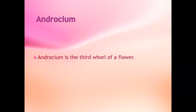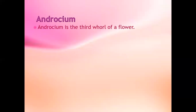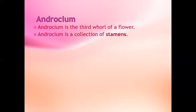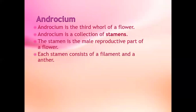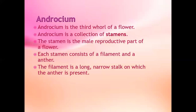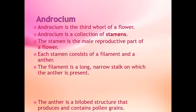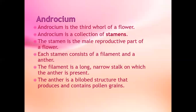Androecium. Androecium is the third wall of a flower. Androecium is a collection of stamens. The stamen is the male reproductive part of a flower. Each stamen consists of a filament and an anther. The filament is a long, narrow stalk on which the anther is present. The anther is a bulb-like structure that produces and contains pollen grains. Pollen grains contain male reproductive cells.